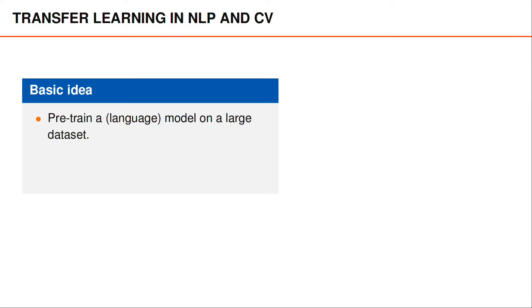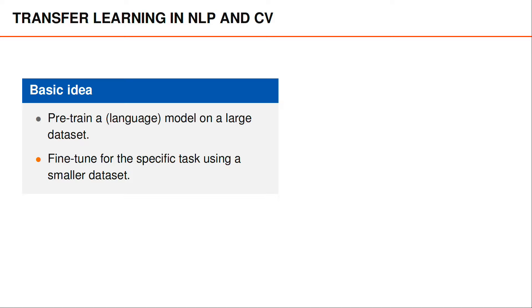The basic idea in transfer learning is to first pre-train a model, usually a large neural network, on a large dataset. After that, we fine-tune the network using a small dataset for the specific task that we would like to solve. When it works, transfer learning makes a huge difference and enables us to solve new problems much more easily, since we can usually download pre-trained weights from the internet, and we no longer need a large dataset for our specific task.